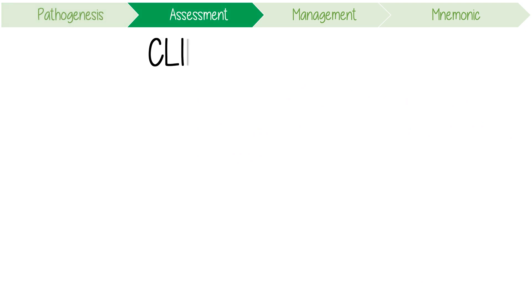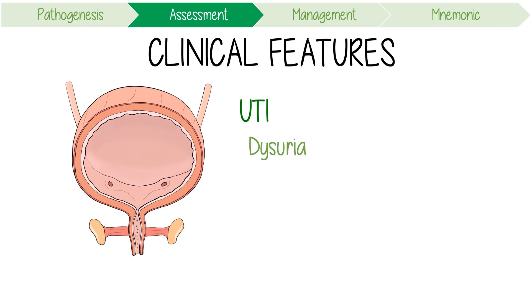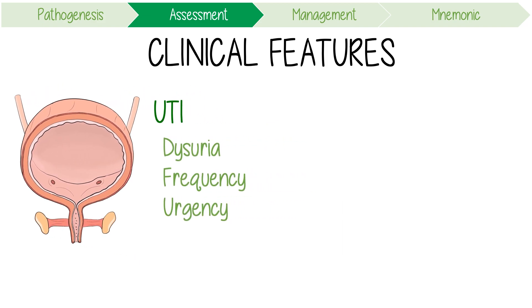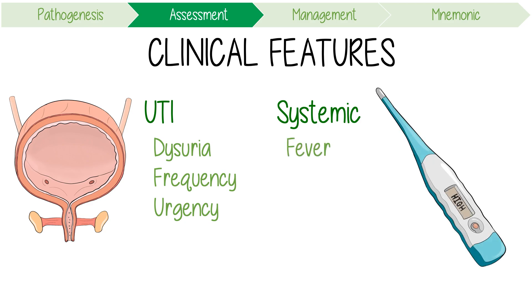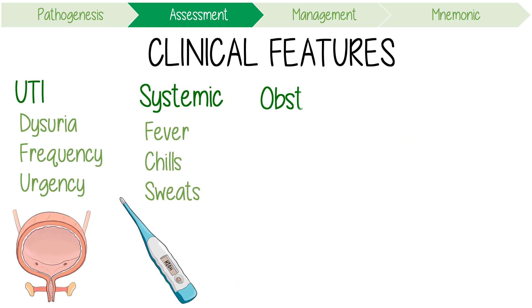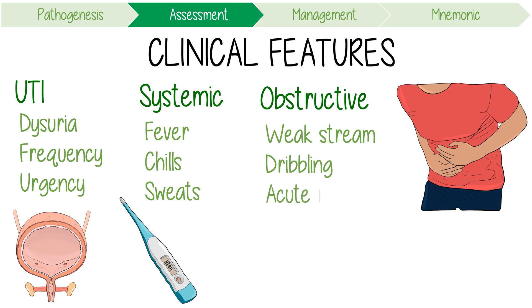The main clinical features of prostatitis include symptoms associated with the UTI, like dysuria, frequency and urgency. It can also cause systemic features like fever, chills and sweats. Moreover, obstructive urinary symptoms can occur due to compression of the urethra, like weak stream, dribbling or urinary retention.